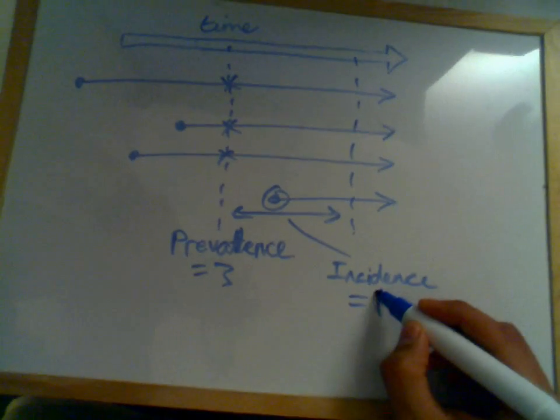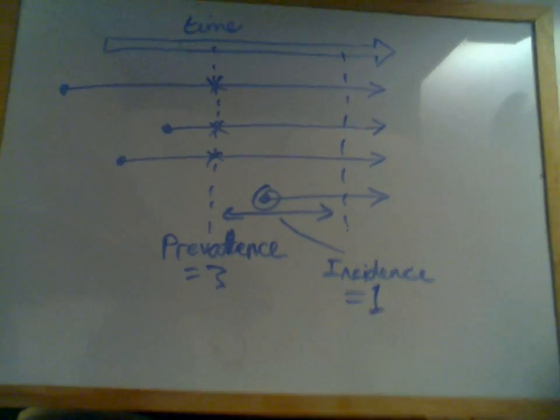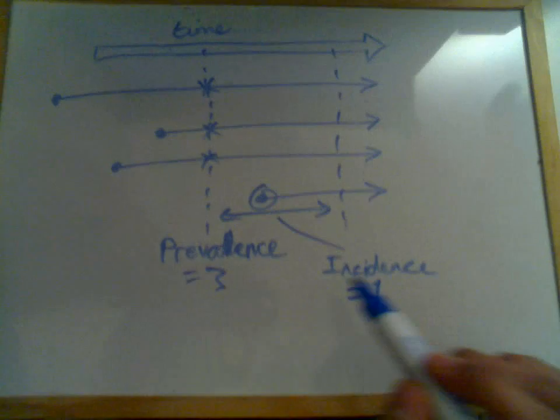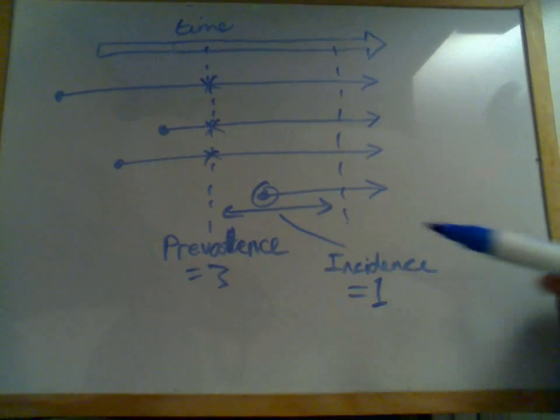So my incidence is one. So prevalence is three, but incidence is one in my population.